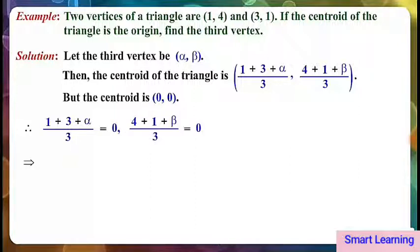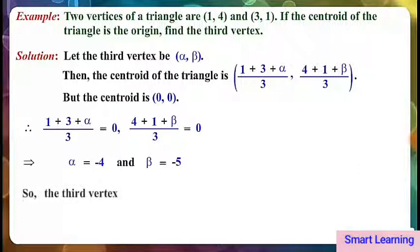This implies alpha is equal to minus 4 and beta is equal to minus 5. So the third vertex is minus 4 comma minus 5.